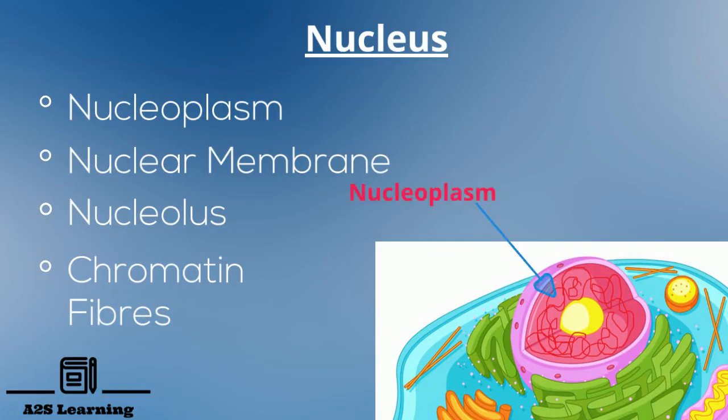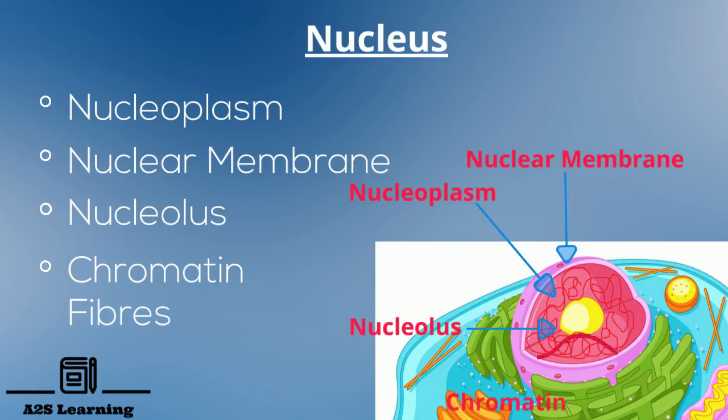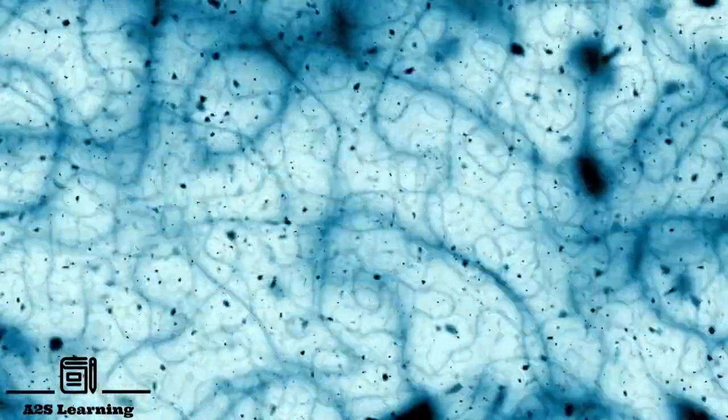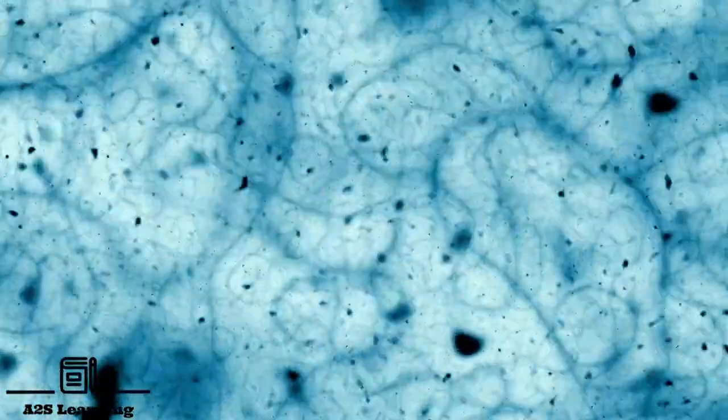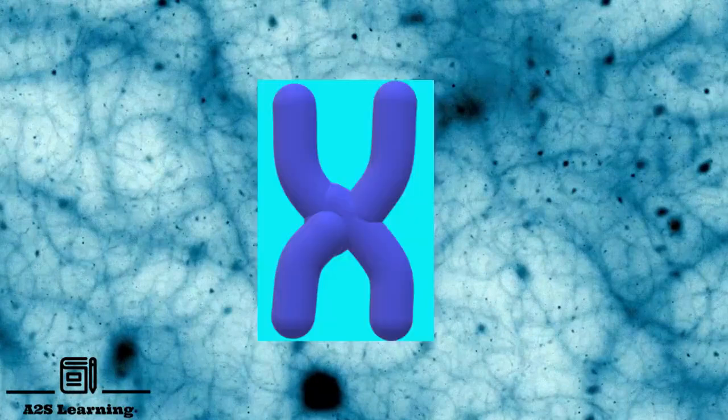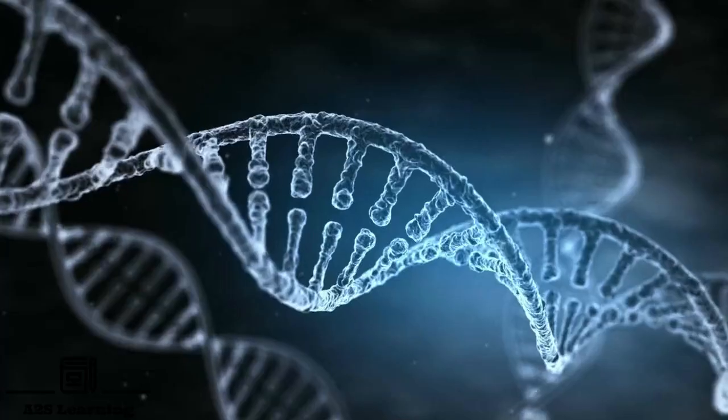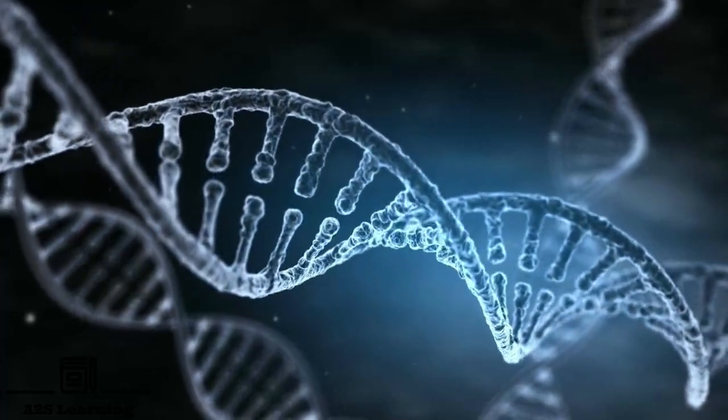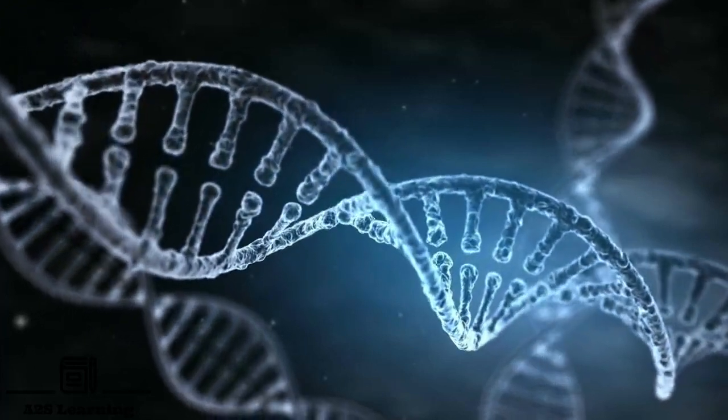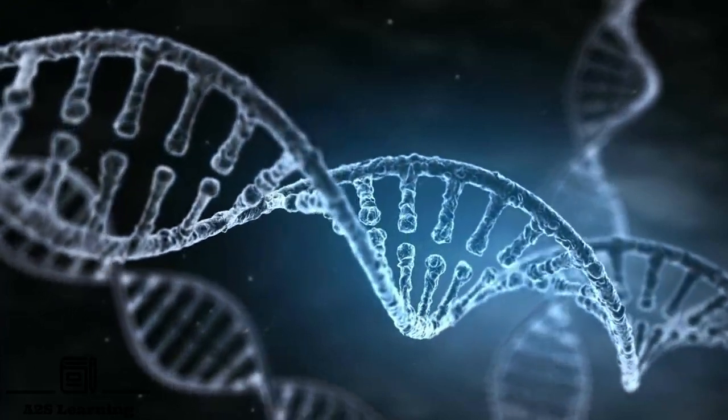Nucleus consists of the fluid called nucleoplasm which is enclosed by a nuclear membrane. Each nucleus contains nucleolus which are associated with chromosomes. Nucleus also contains chromatin fibers which are long thread-like strands. At the time of cell division, they become distinct and short structures called chromosomes. A chromosome is a long DNA molecule with part of all the genetic material of an organism.